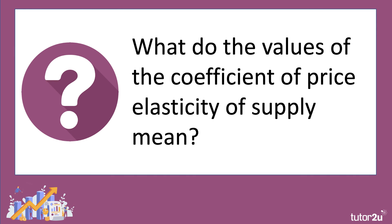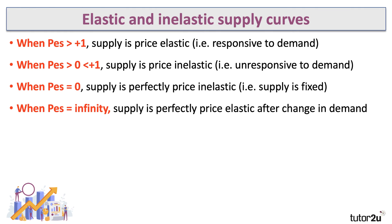Quick revision on the values of the coefficient of price elasticity of supply. If PES is greater than one, supply is price elastic — responsive to demand. If it's greater than zero but less than one, supply is price inelastic — fairly unresponsive, perhaps due to capacity constraints. If PES equals zero, supply is perfectly price inelastic — fixed supply. And if PES equals infinity, that's the constant cost example — supply is perfectly price elastic.